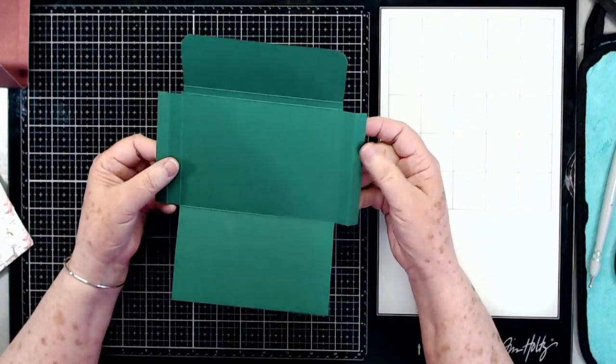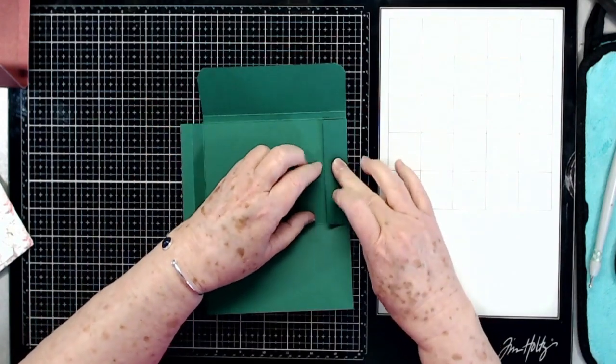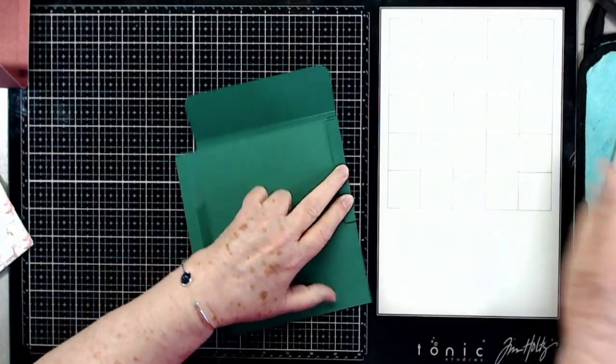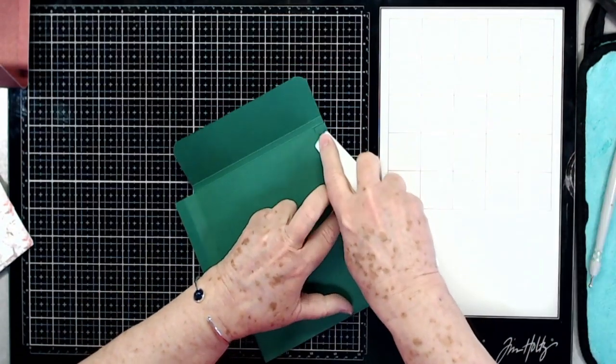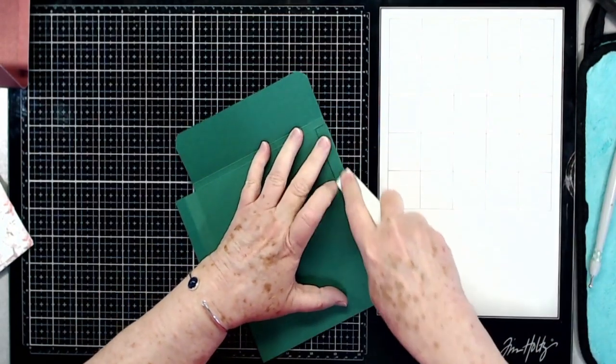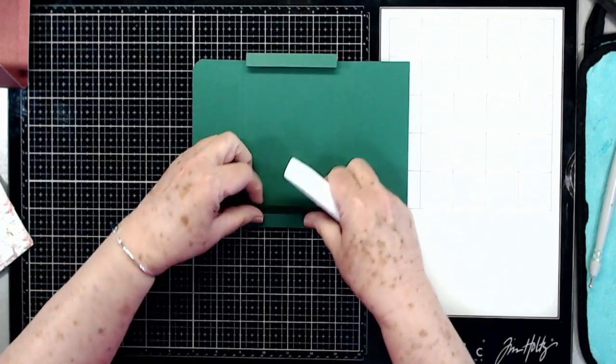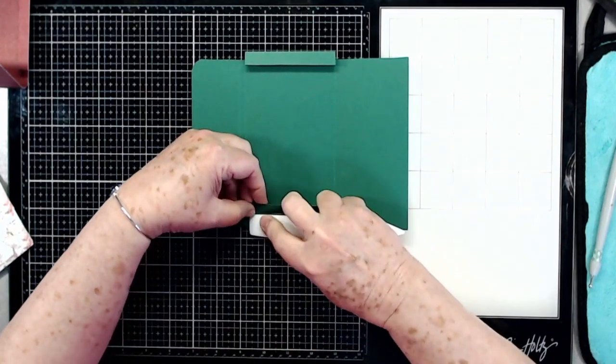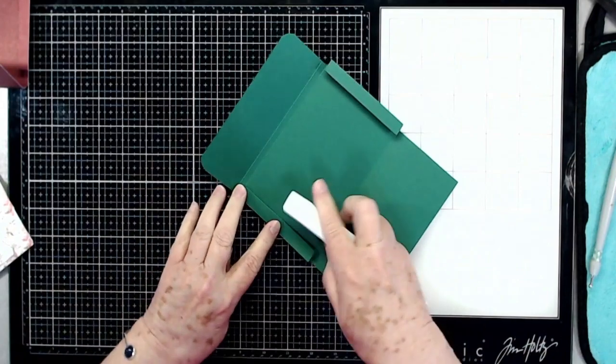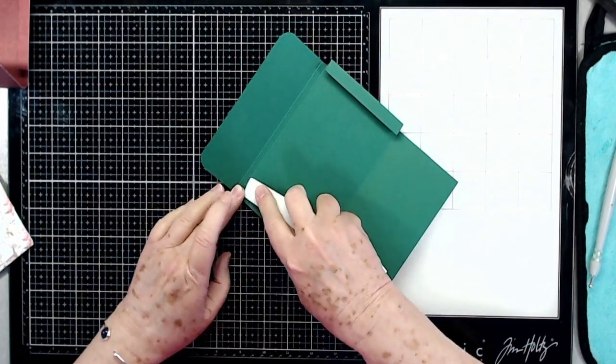On these tabs on the side, fold one in and fold one back. I'm going to go ahead and burnish that really well. Fold the bottom one in, burnish that, and then fold the top one back and burnish that really well.